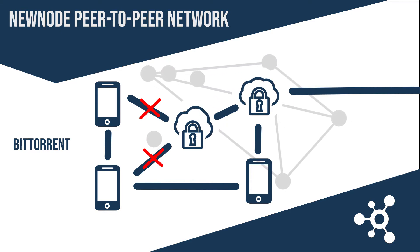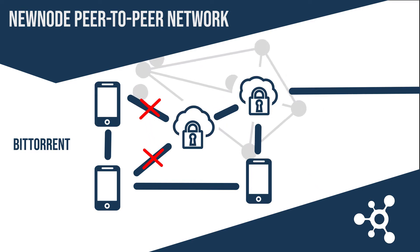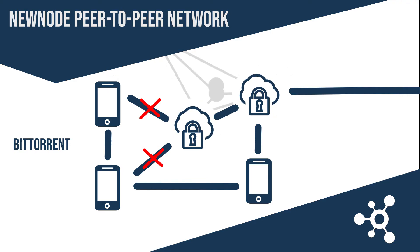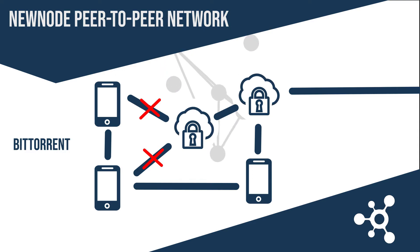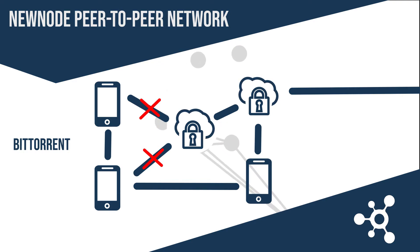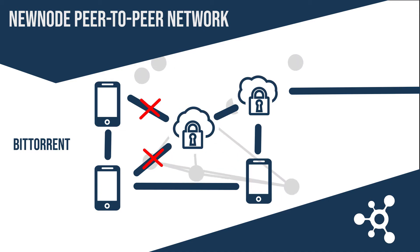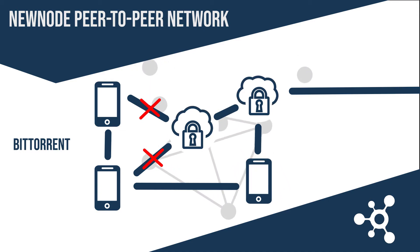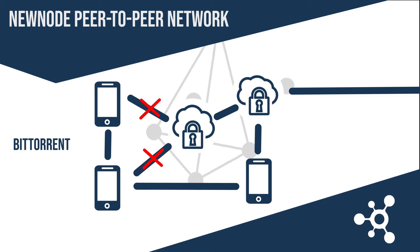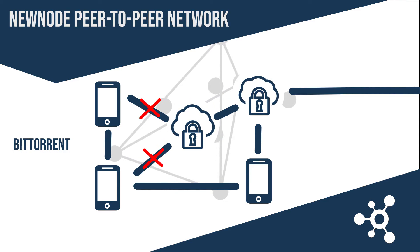To understand the scale, consider this. Even with a modest user uptake — say 10 NewNode-enabled mobile apps deployed worldwide with a combined total of 10 million users — the NewNode network will have close to 10 million nodes capable of sending and receiving data, depending on the number of devices online. Ultimately, NewNode's decentralized content delivery network will always be several orders of magnitude larger than traditional CDNs, which even at their maximum scale use only hundreds of thousands of servers.